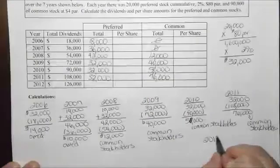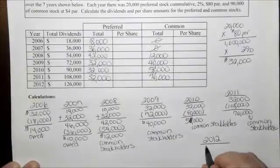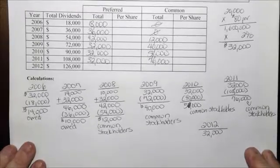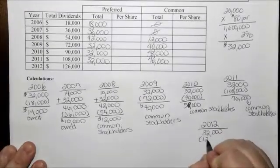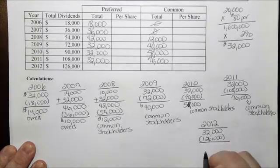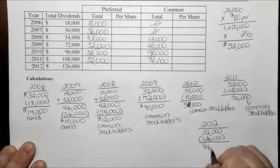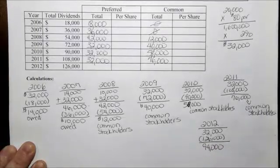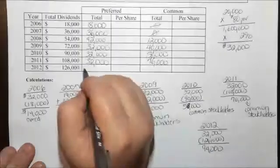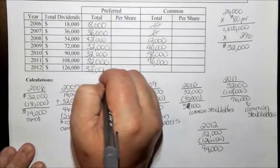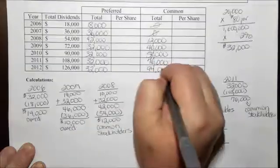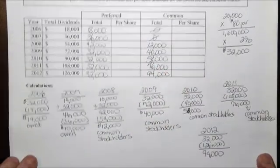In 2012, the preferred stockholders again should get $32,000. However, $126,000 in dividends were declared, and that left $94,000 to go to the common stockholders. So preferred gets $32,000 and the common stockholders get $94,000.